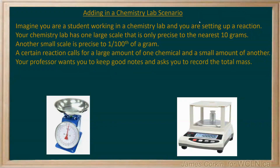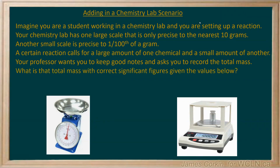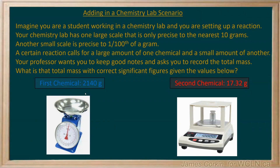Your professor also wants you to keep good notes and asks you to record the total mass of your chemicals. What is that total mass with correct significant figures given these values? The first chemical: 2140 grams, measured on the large scale, and the second chemical: 17.32 grams, measured on the small scale.